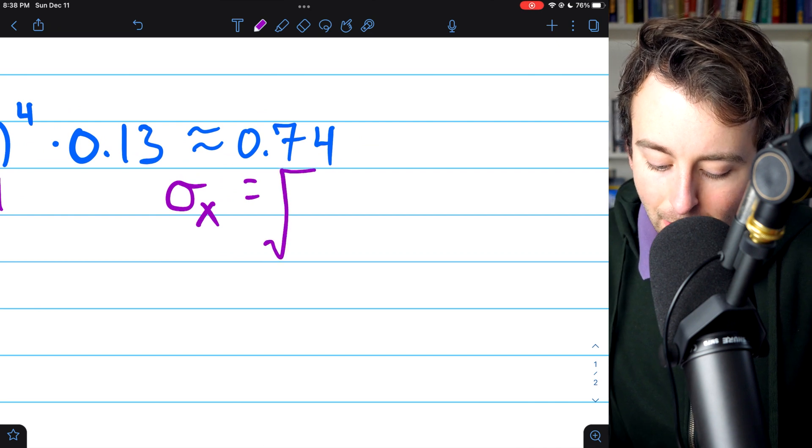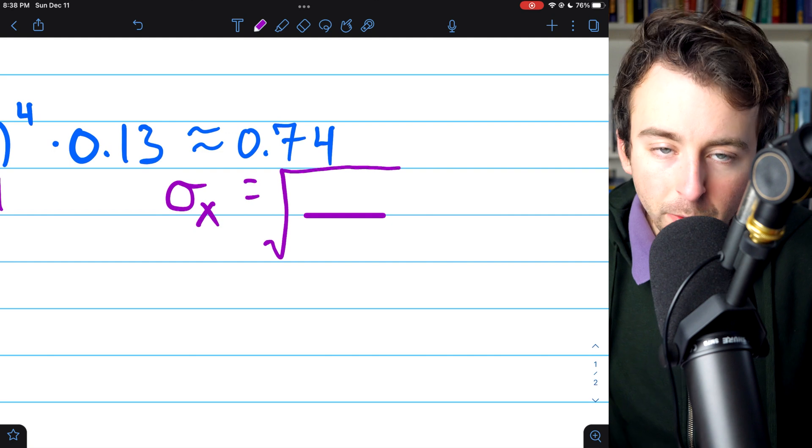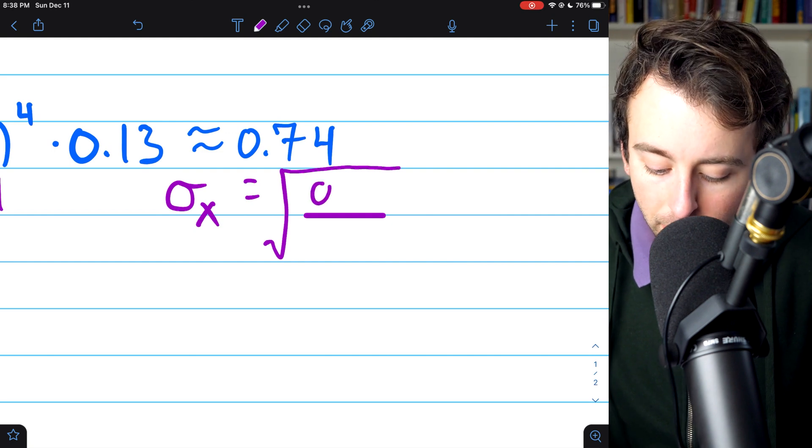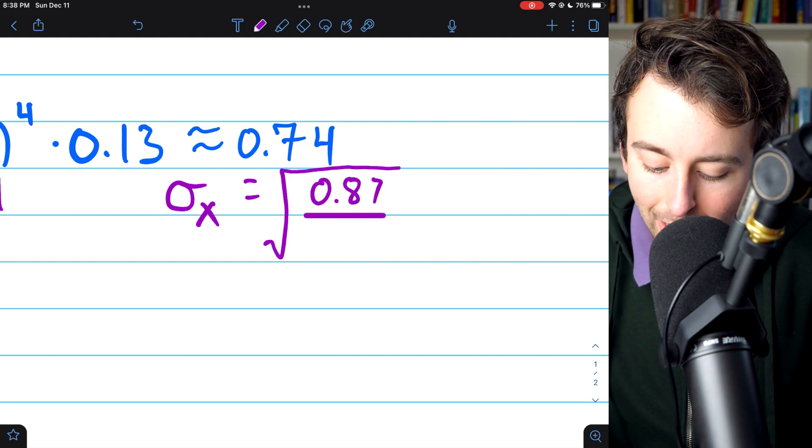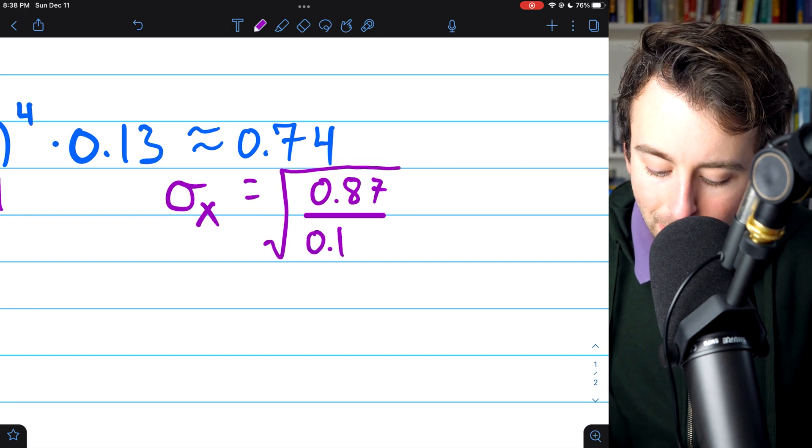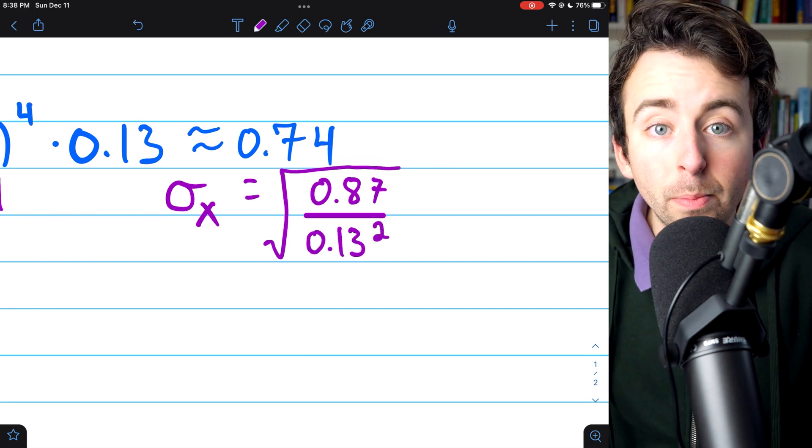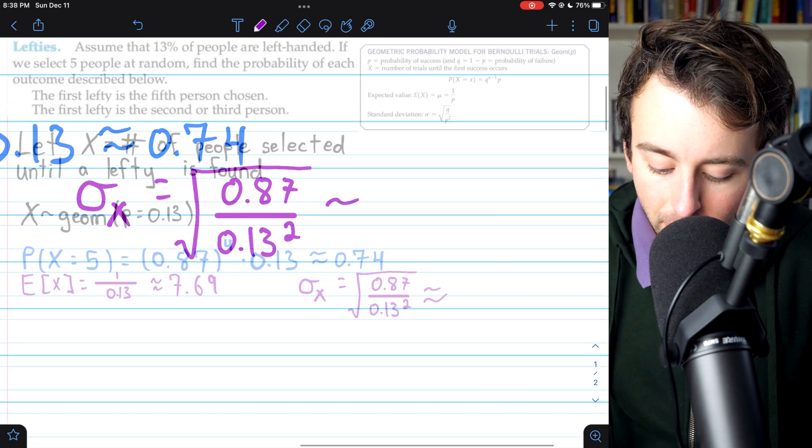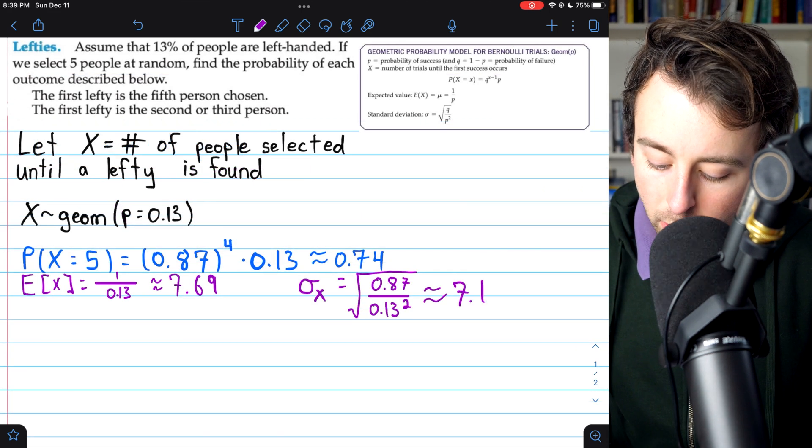So we'll just get a big square root going here. In the numerator, we have q, the probability of failure. That's just 1 minus p. So again, that's 0.87. And then we divide by p squared. So divide by 0.13 squared. And this is about 7.17.